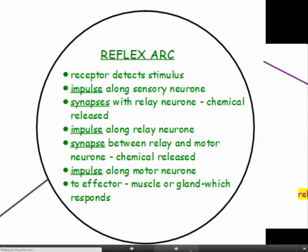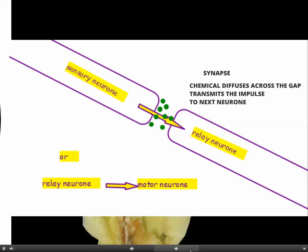Here you can see the synapse between the sensory neuron and the relay neuron — the next neuron in the sequence. There's a gap between these two neurons, and the little green blobs represent the chemical. The sensory neuron releases the chemical, the chemical crosses the gap, and the chemical triggers the impulse in the next neuron. This is the same for the next gap — the relay neuron to motor neuron synapse — where a chemical is released, crosses the gap, and causes the impulse to be triggered in the next neuron.